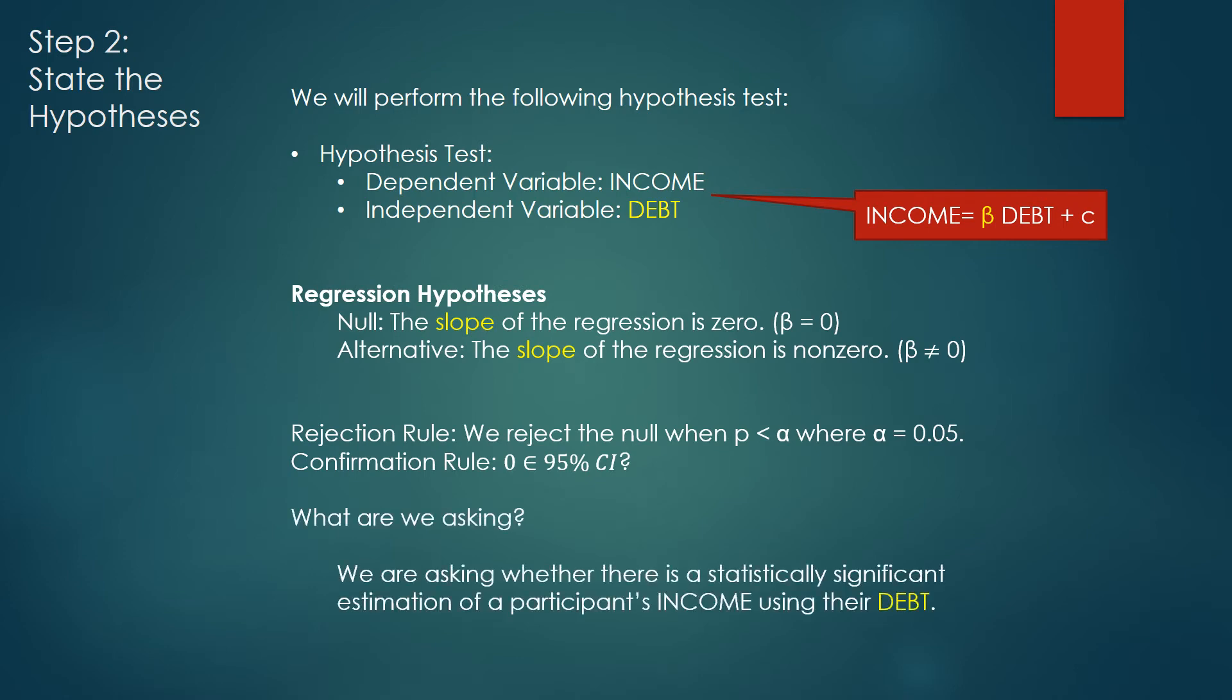So what are we really asking here? We are asking whether there is a statistically significant estimation of a participant's income using debt. Or in layman's terms, can we use debt to estimate someone's income and be self-assured that the statistics in doing so are sound?